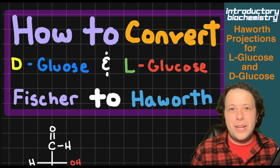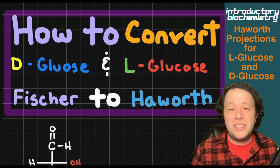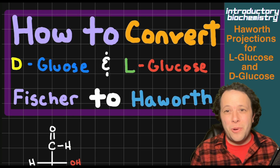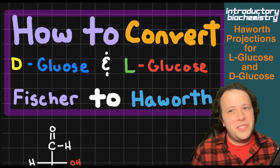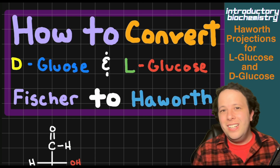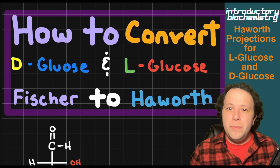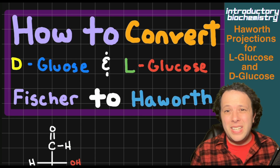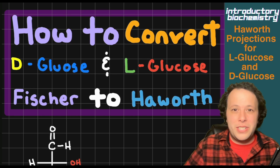Hello and welcome back to another episode with Dr. Dan. Today we're going to be learning how to convert D and L glucose from a Fischer to a Haworth projection. What makes this so different than my previous videos on Haworth projections is that D and L are enantiomers of one another, meaning that the Haworth projection is going to end up being flipped. So we're going to go through this step by step.